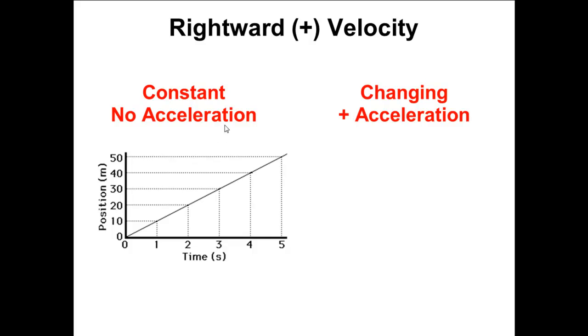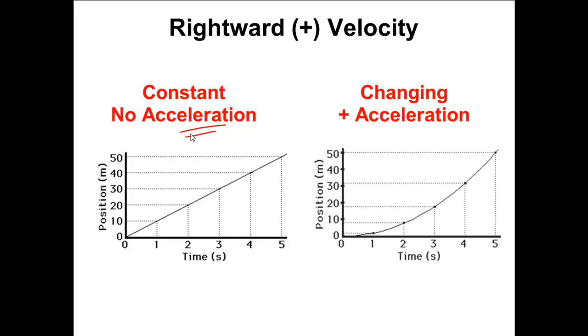And we also say this is at no acceleration. It's constant velocity, no acceleration. We haven't addressed this yet, but when I have a changing velocity on a PT graph, the first time you're going to see it, I have a curve line. A curve line on a PT graph like this means changing acceleration, or changing velocity rather, constant acceleration. So this object is accelerating.